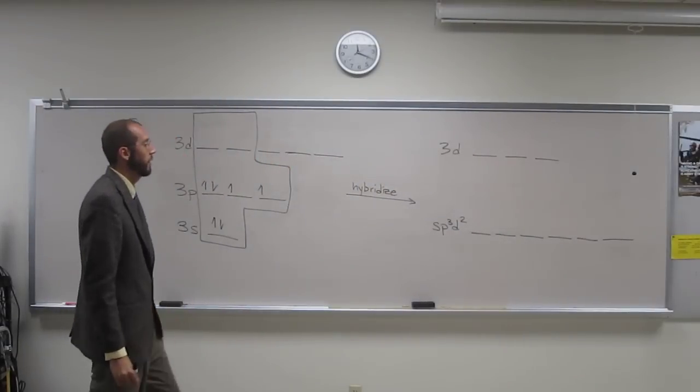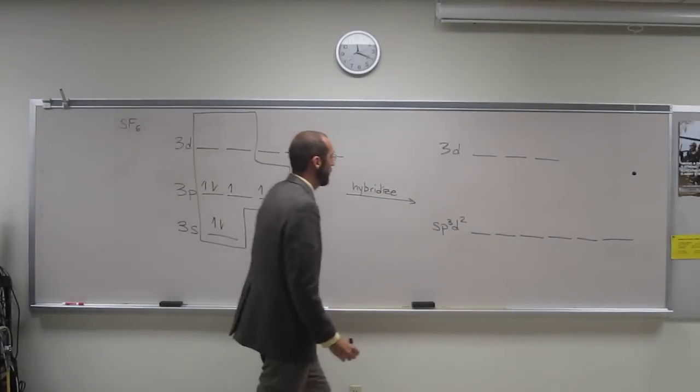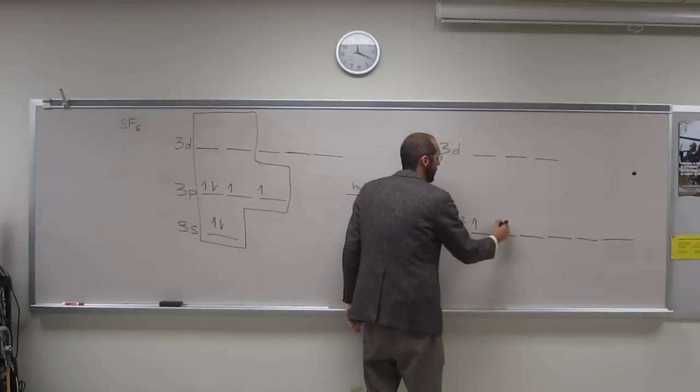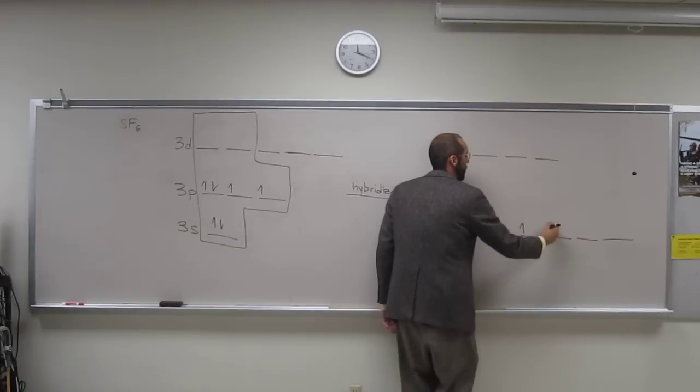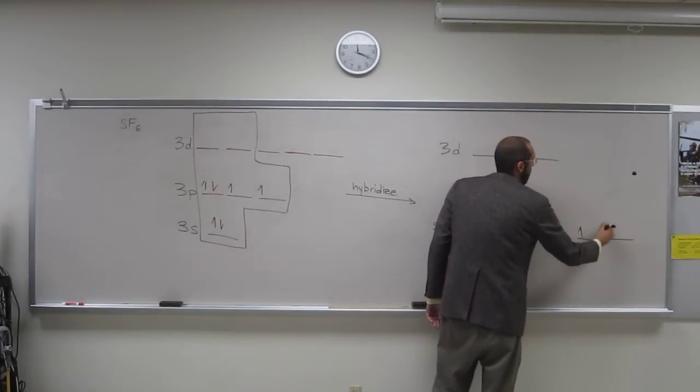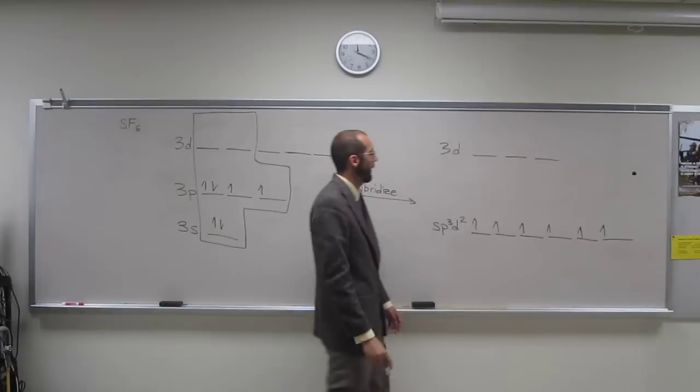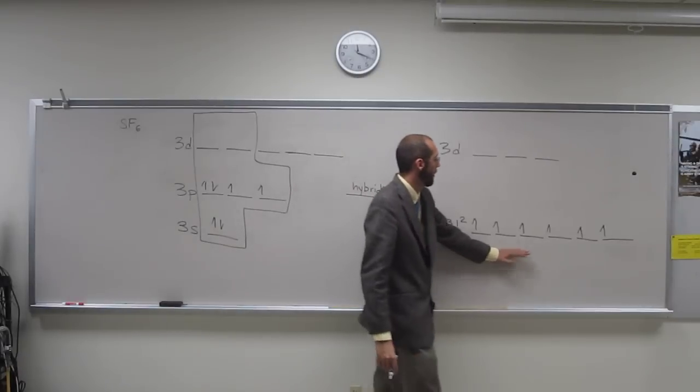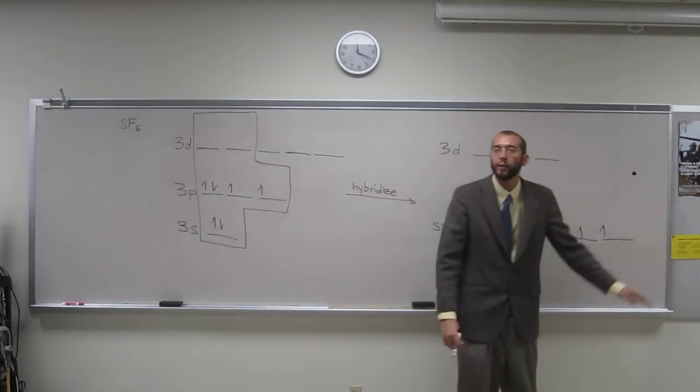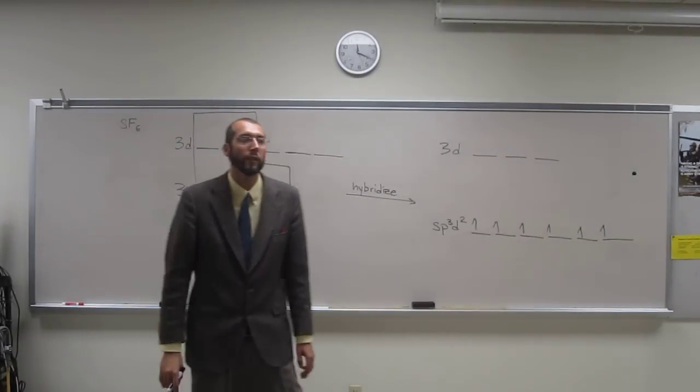And we're just going to throw in our electrons according to the rules that we already know. Like that. In this case, we have one, two, three, four, five, six half-filled orbitals, so we should be able to make six bonds.